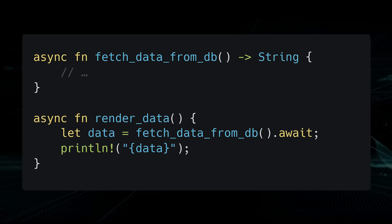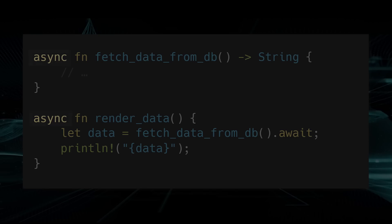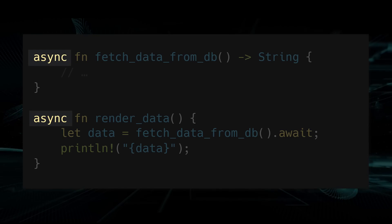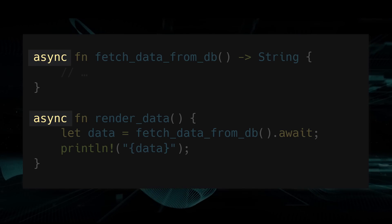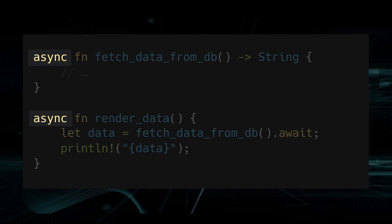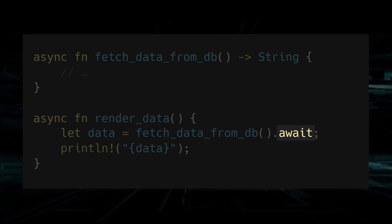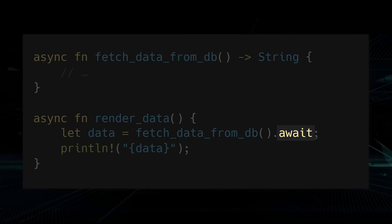The async/await syntax in Rust allows us to write asynchronous code that looks similar to synchronous code, which makes it more readable and easier to reason about. The async keyword is used to mark a function as asynchronous, which means it can execute in a non-blocking manner and potentially return control to the calling code before it has completed. The await keyword is used within an asynchronous function to pause execution until a particular operation completes, allowing other tasks to run in the meantime.